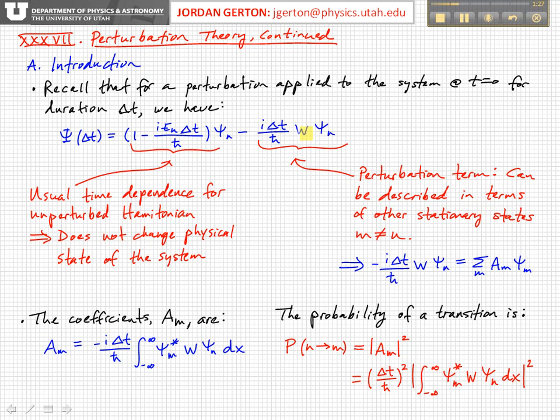And so when we multiply the perturbation operator, which again has units of energy, times the eigenfunction that you start in, psi sub n, then we get a new function. And that new function can be described in terms of other stationary states, and so this term here can be described as a sum over indices, sum over amplitude coefficients times the eigenfunctions.